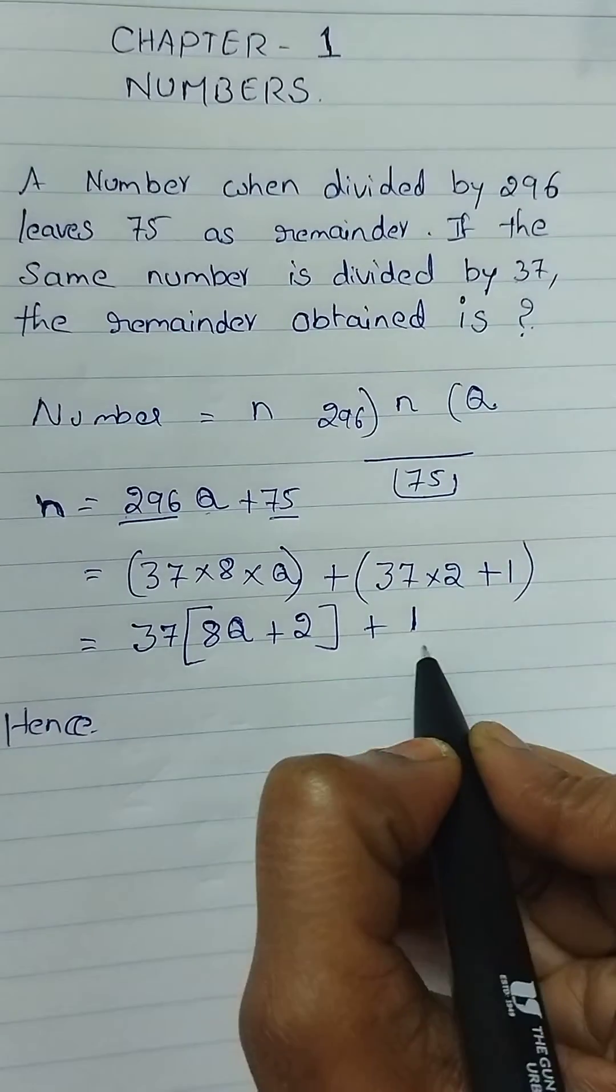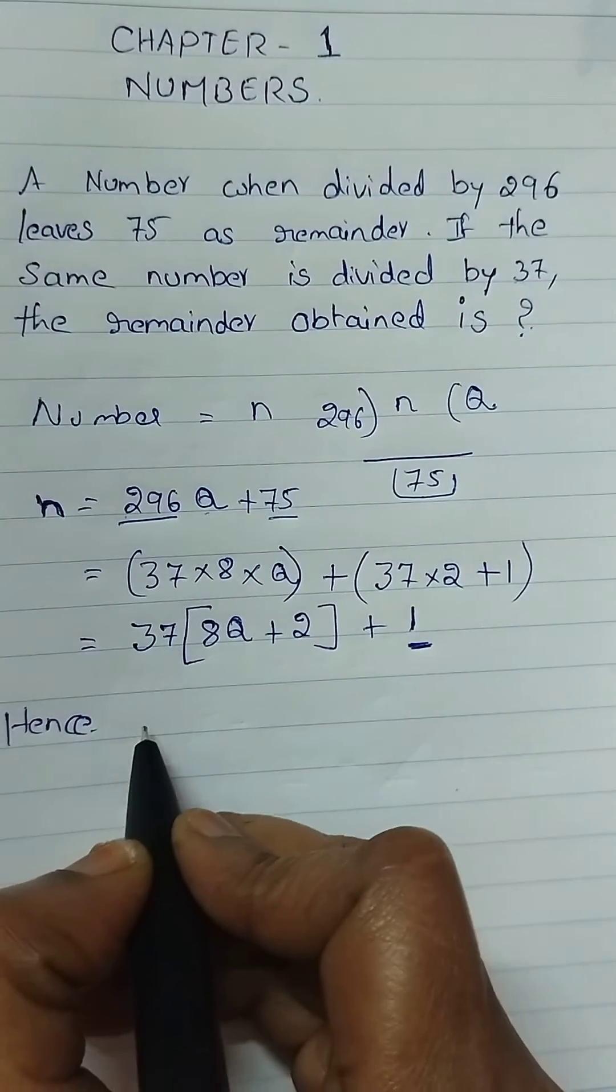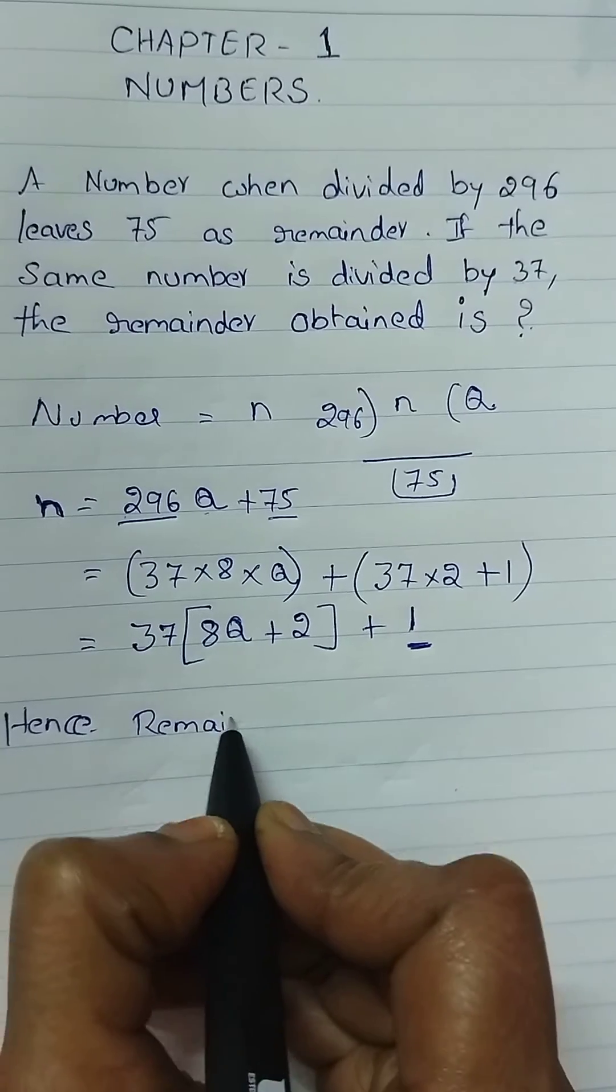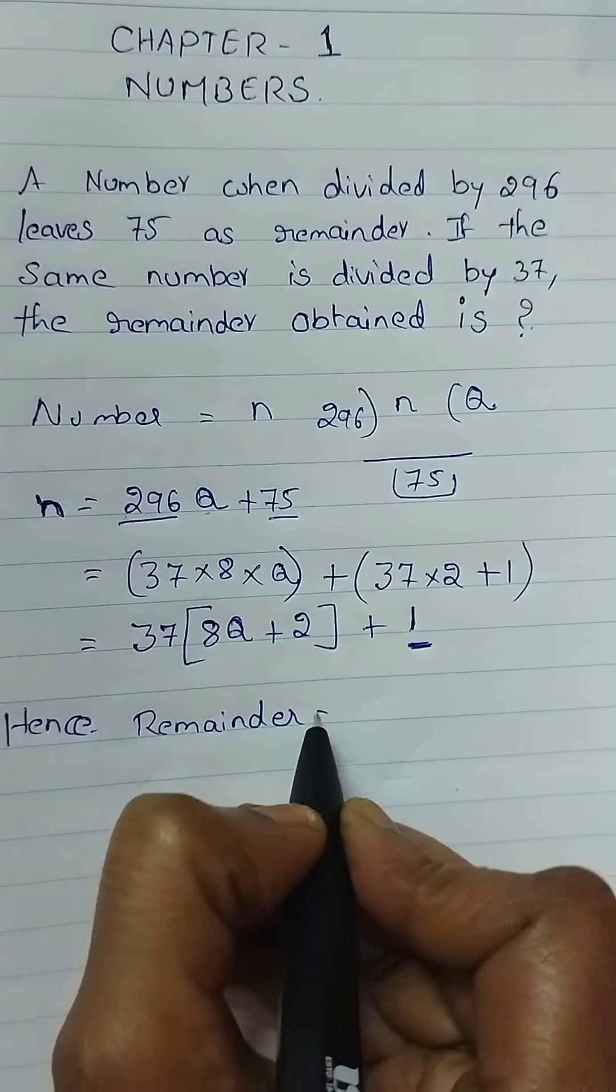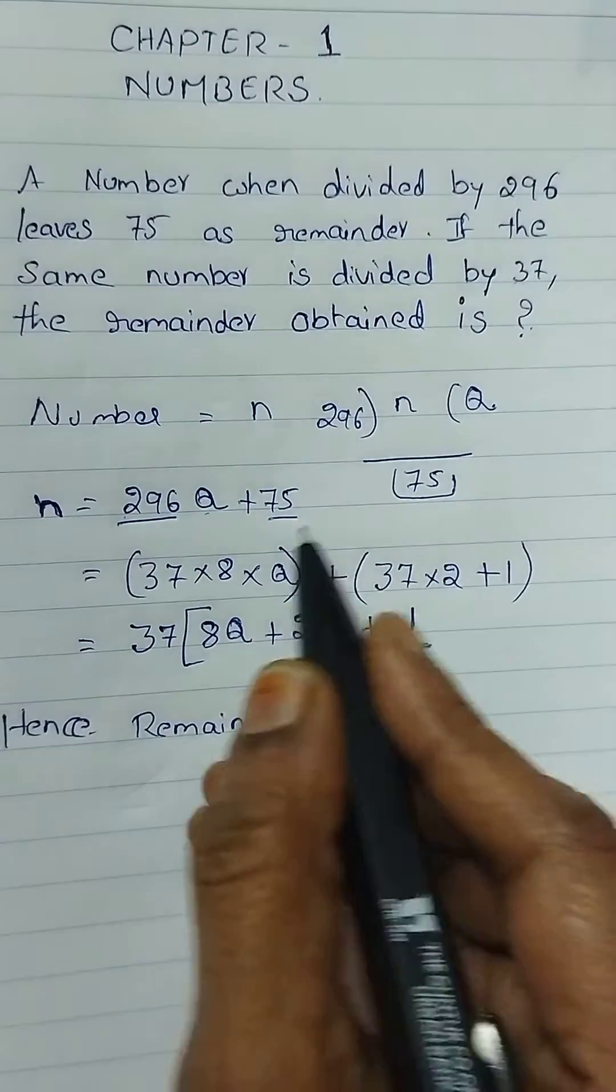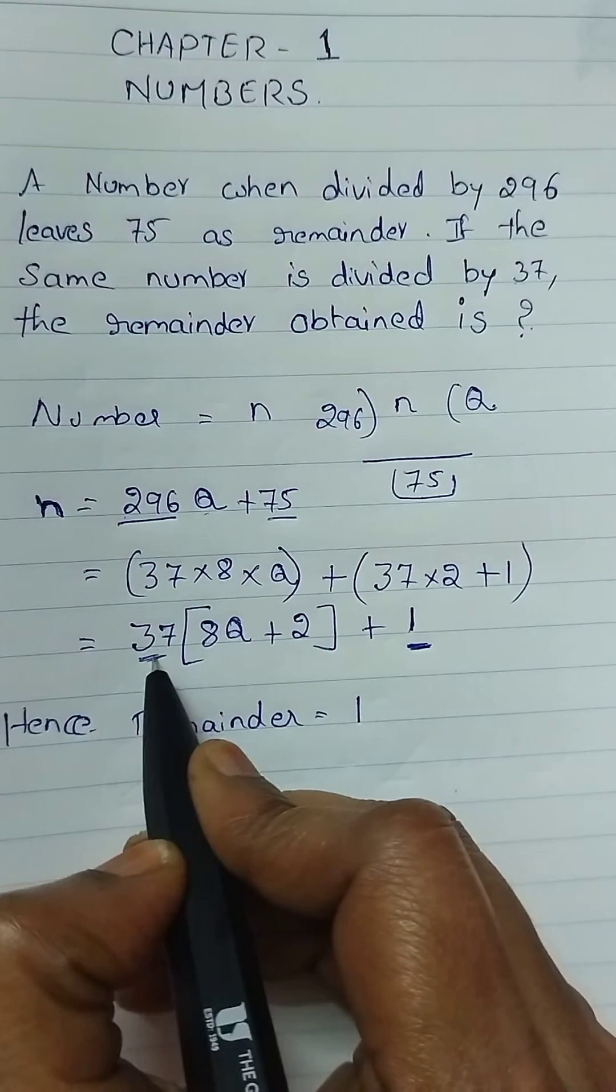Hence this is the remainder. Remainder equals 1. If the same number is divided by 37, the remainder is 1.